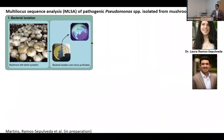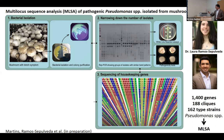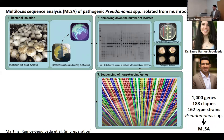The first research I'd like to talk about is a survey started with Dr. Laura Ramos Sepulveda. She went to five different mushroom farms in Pennsylvania, collected mushrooms with blotch disease, isolated the bacteria, and we narrowed down the number of isolates by looking at their fingerprint based on rep PCR — because we're talking about hundreds of isolates. We did pathogenicity tests and discarded those that did not cause disease. We also did phenotypic assays including the white line reaction assay, and I compiled a database of 1,400 housekeeping genes from public databases belonging to 188 cliques and 162 type strains of Pseudomonas, which allowed us to perform a multi-locus sequence analysis.